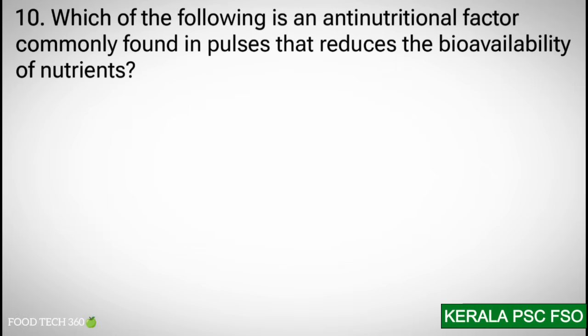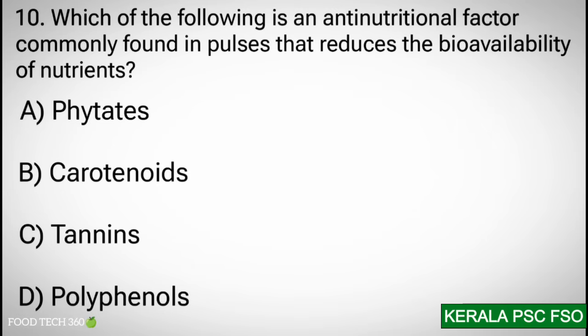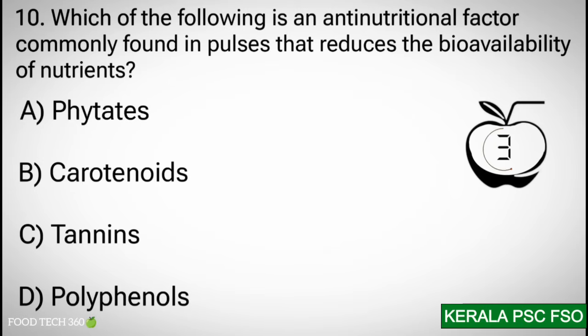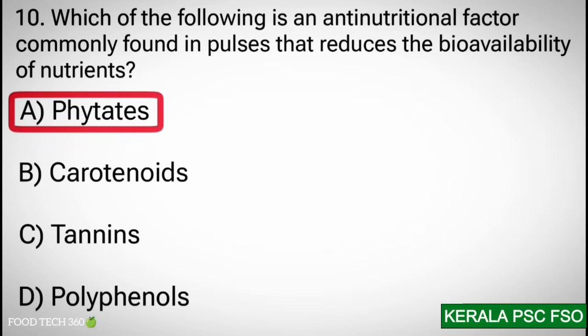Question 10: Which of the following is an anti-nutritional factor commonly found in pulses that reduces the bioavailability of nutrients? Options: a) phytates, b) carotenoids, c) tannins, d) polyphenols. Correct answer: a) phytates.